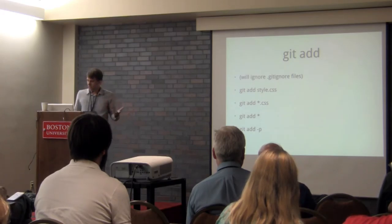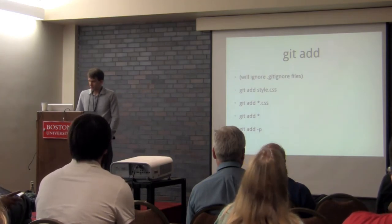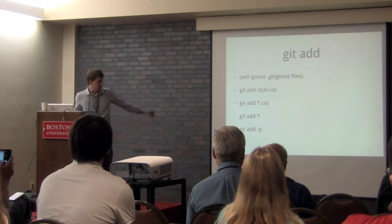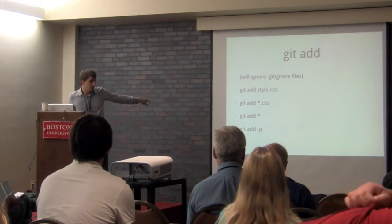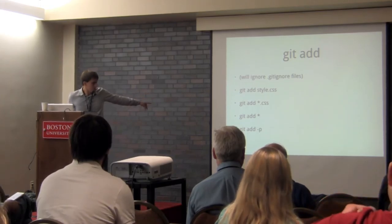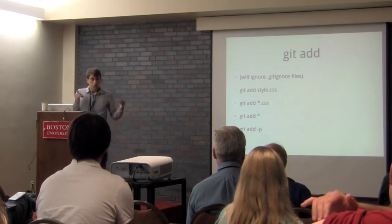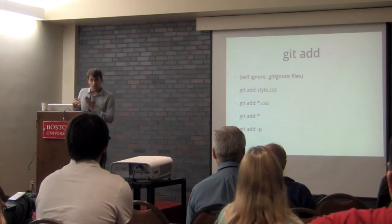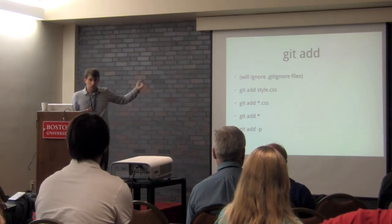Expanding on `git add` a bit more — ignoring whatever's in .gitignore, we can add any file we want: any CSS file, or everything in the repository. The last one is interesting: `git add -p` allows you to go line by line through your commits and it will ask 'hey, this was changed — do you want to add this?'